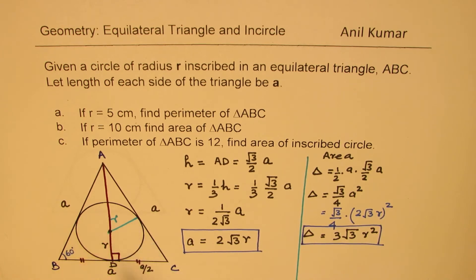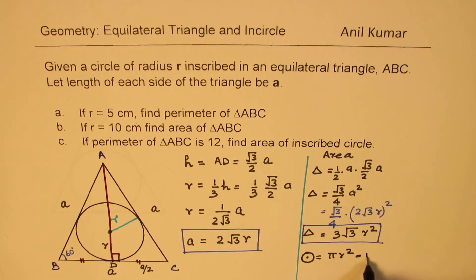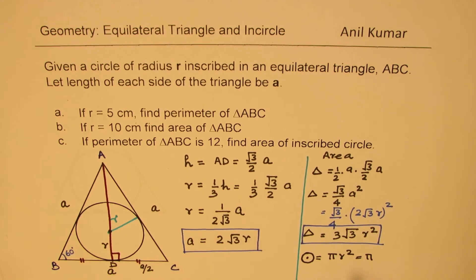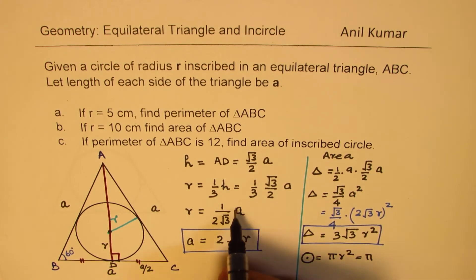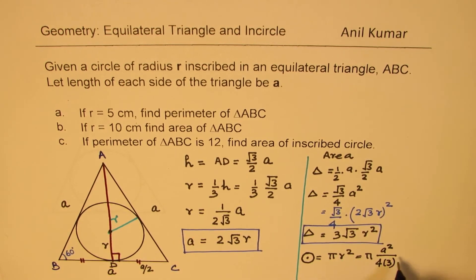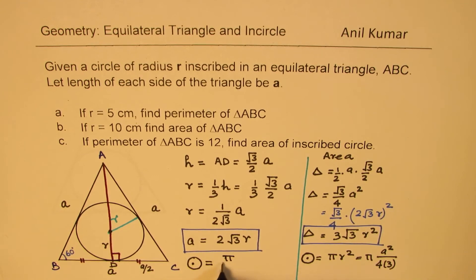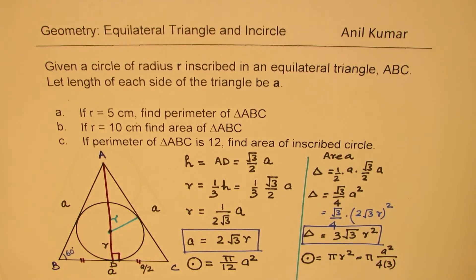We can also find the area of the circle. The area equals πr². Replacing r with a/(2√3), we get r² = a²/(4·3) = a²/12. Therefore, the area of the circle is (π/12)a².